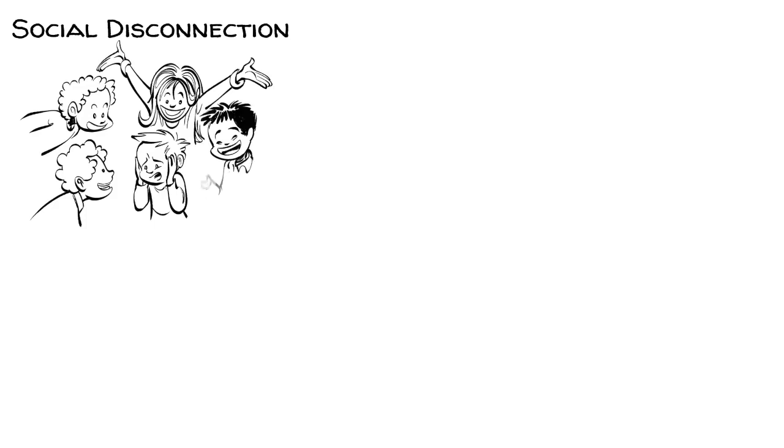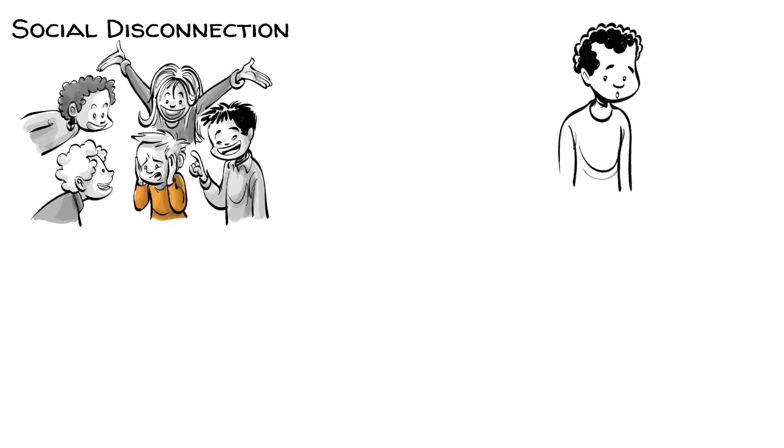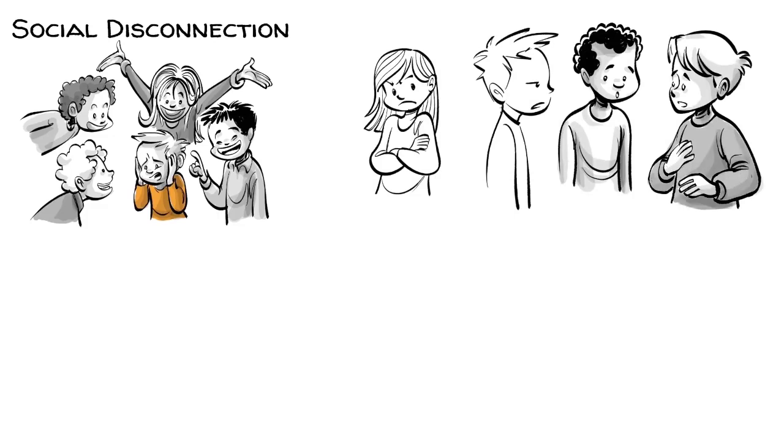Timo experiences social disconnection. He has trouble connecting with others because social settings overwhelm his sensitivity and desire for order. Because human emotions are incredibly complex and don't follow a set predictable pattern, Timo often finds himself misreading situations and upsetting people around him.